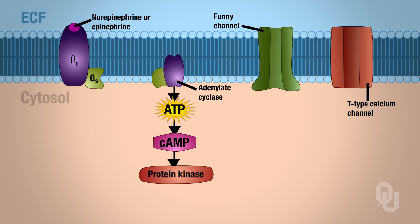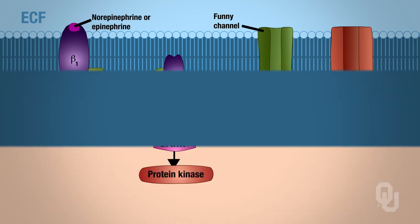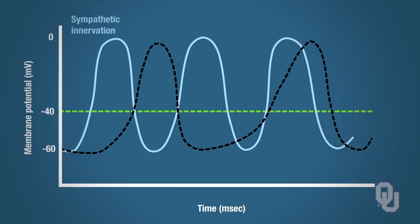Protein kinase phosphorylates the funny channels and the T-type calcium channels. This phosphorylation augments their opening, causing a faster slow depolarization — meaning the cell reaches threshold faster and the slope is much steeper. On the graph, the sympathetic innervation is shown as the blue line, and the dotted line is normal. Notice how much faster slow depolarization is when these sodium and voltage-gated T-type calcium channels are augmented.